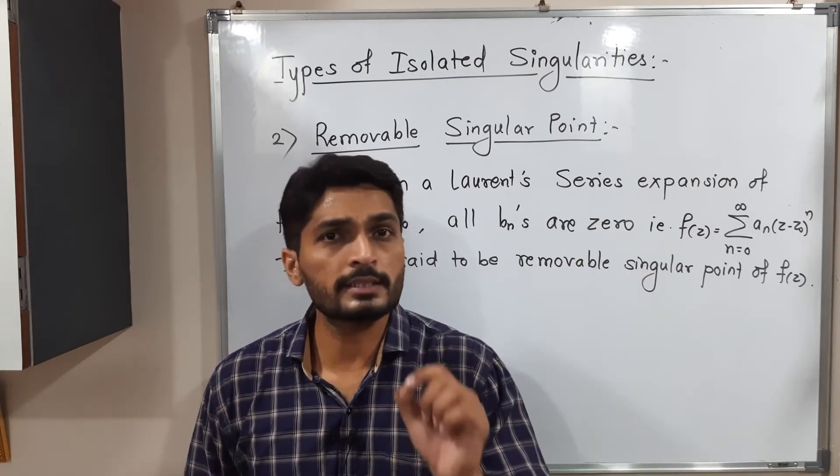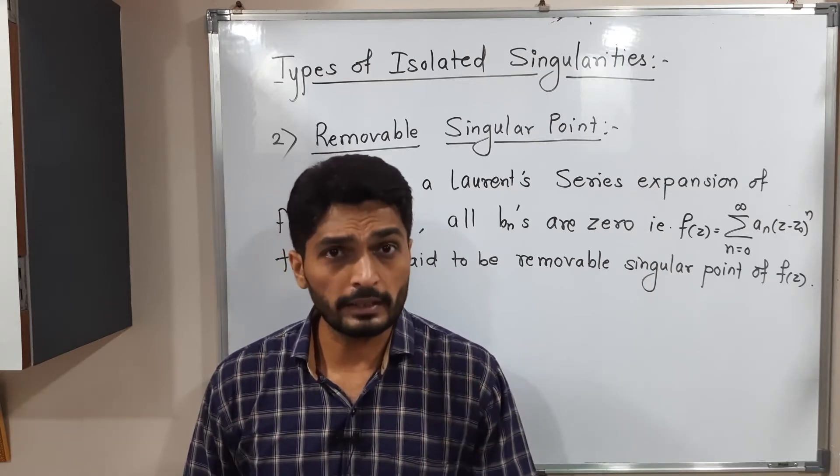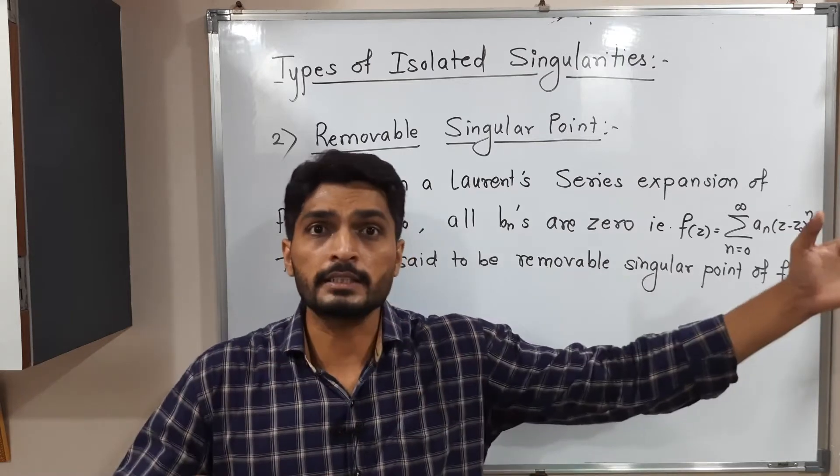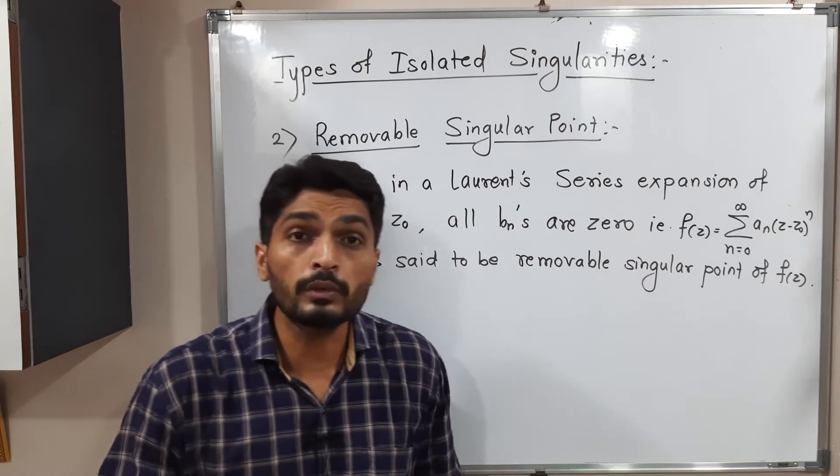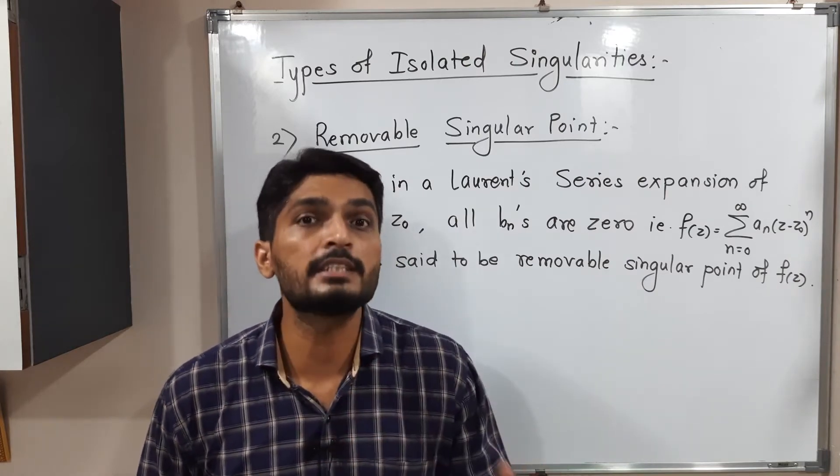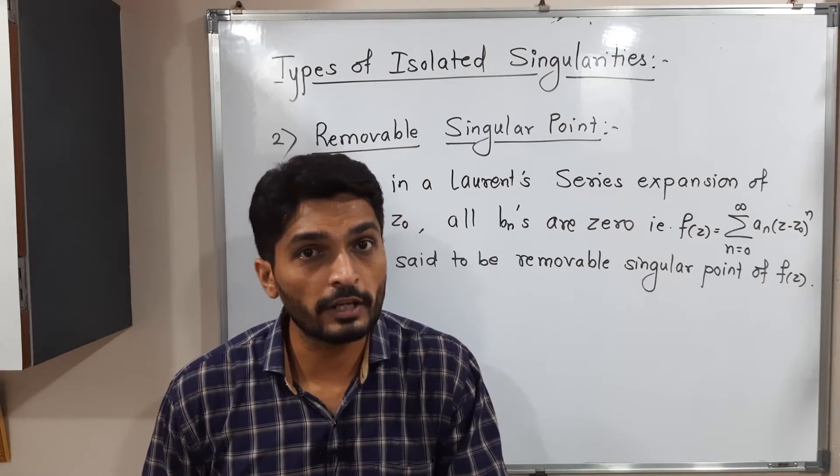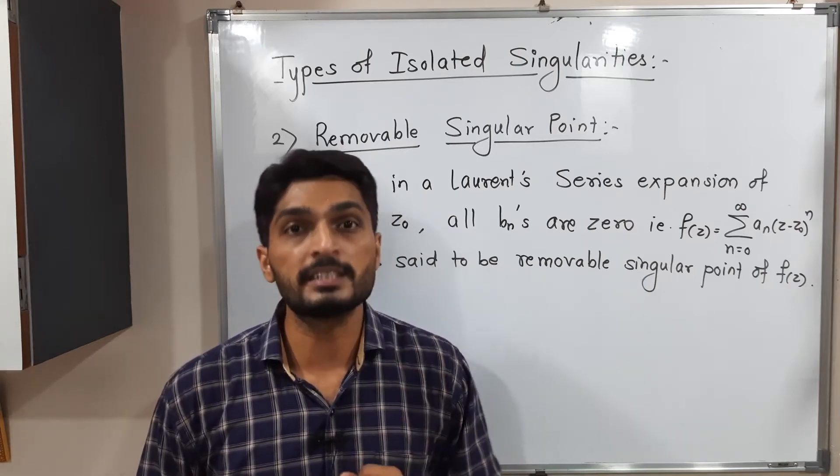So suppose z₀ is a singular point. But if you find the Laurent series expansion, and it has only the analytic part—there is no principal part—then such a type of singularity is said to be a removable singularity.